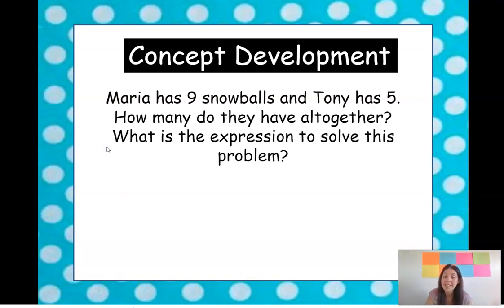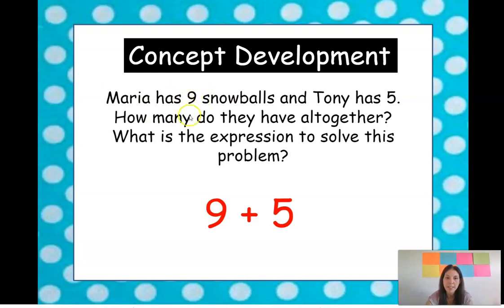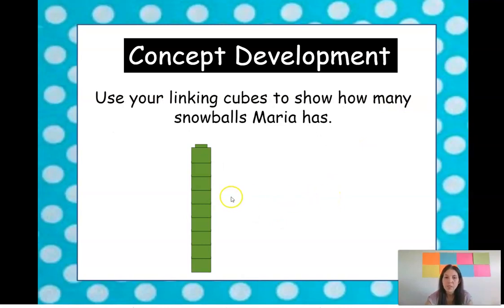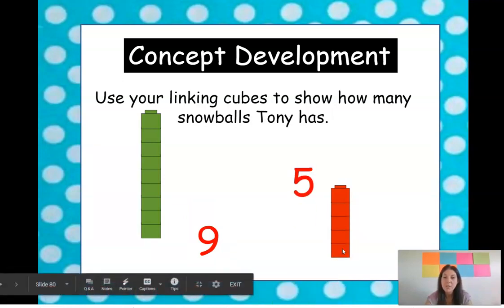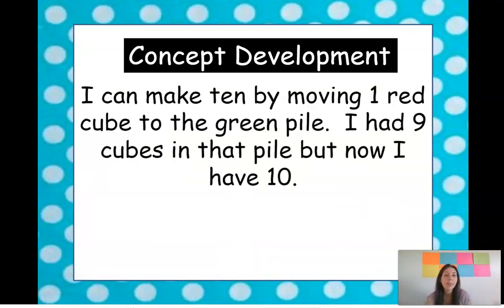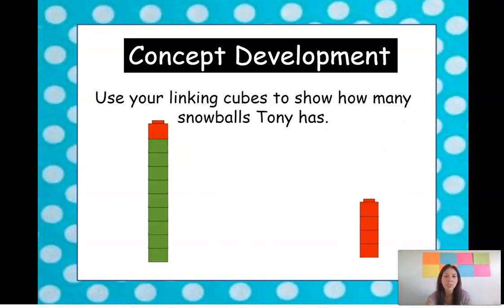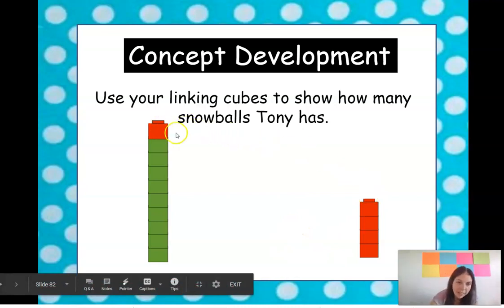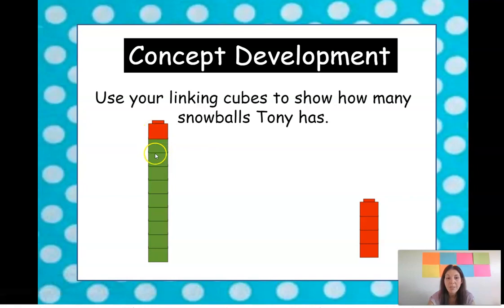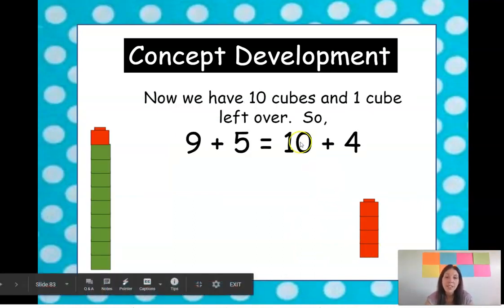This time Maria has nine snowballs and Tony has five snowballs. How many do they have all together? The expression is nine plus five. So we have nine cubes on that side and one, two, three, four, five cubes on that side. We want to make a ten by moving one red cube to the green. We took one cube from over here and moved it over here — so now we have four over here. Nine green and one more gives us ten. So we have ten and four giving us 14, which is the same as what we started with: nine and five.